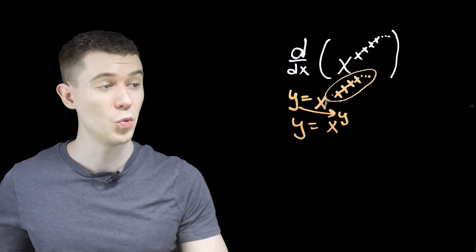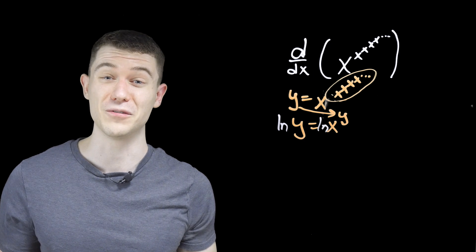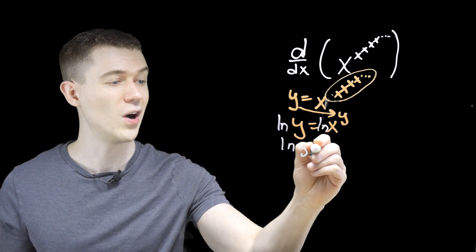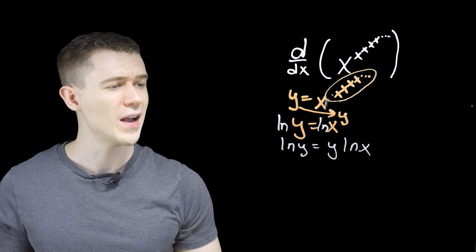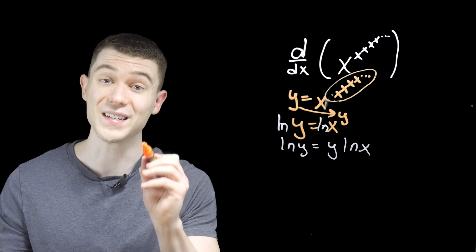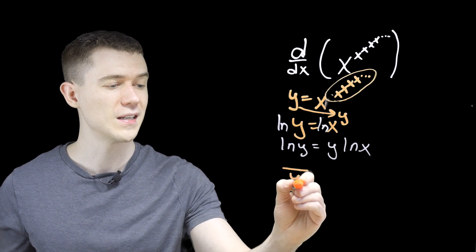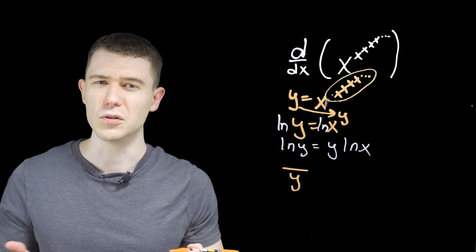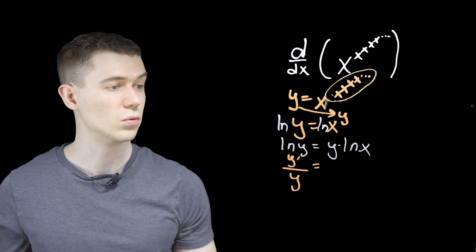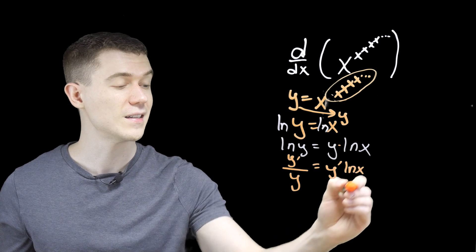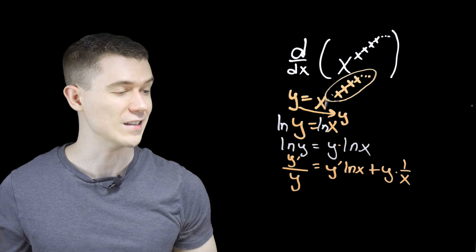Now we can take the derivative — no problem. We take the ln of both sides and do logarithmic differentiation. So: ln of y equals y times natural log x, by the logarithm power rule. Now let's take the derivative of both sides with respect to x using implicit differentiation. The derivative of ln y is y prime over y. On the right we have a product rule: the derivative of y is y prime, times ln x, plus y times 1 over x.